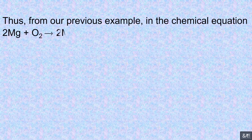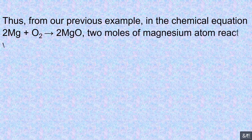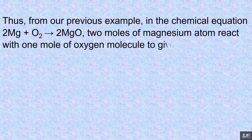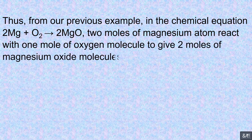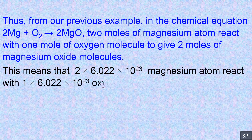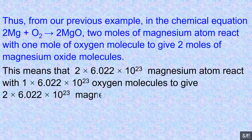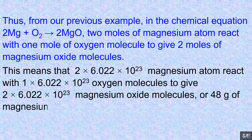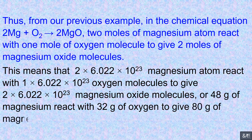From our previous example, in the chemical equation 2Mg + O₂ → 2MgO, 2 moles of magnesium atoms react with 1 mole of oxygen molecules to give 2 moles of magnesium oxide molecules. This means that 2 × 6.022 × 10²³ magnesium atoms react with 1 × 6.022 × 10²³ oxygen molecules to give 2 × 6.022 × 10²³ magnesium oxide molecules, or 48 g of magnesium reacts with 32 g of oxygen to give 80 g of magnesium oxide.